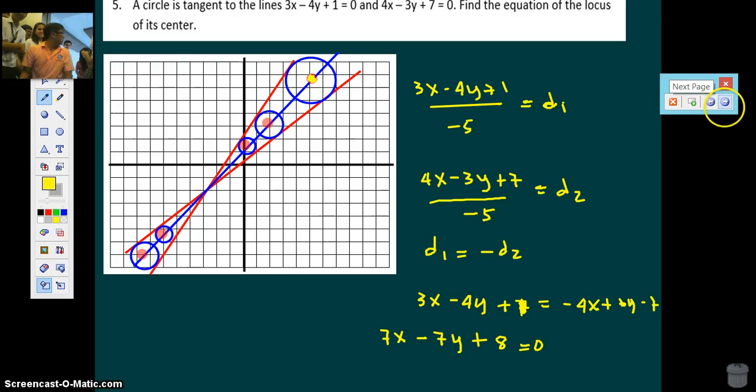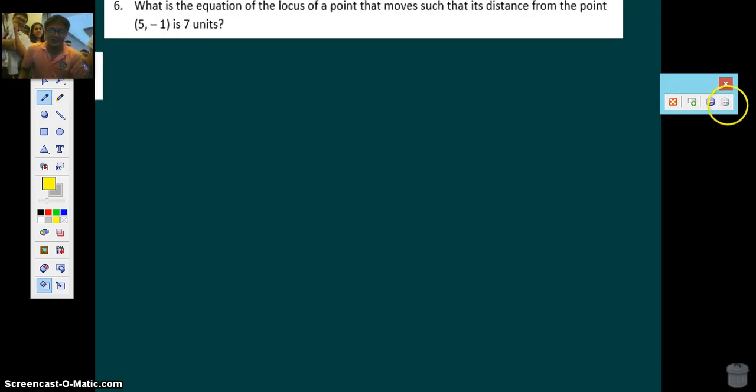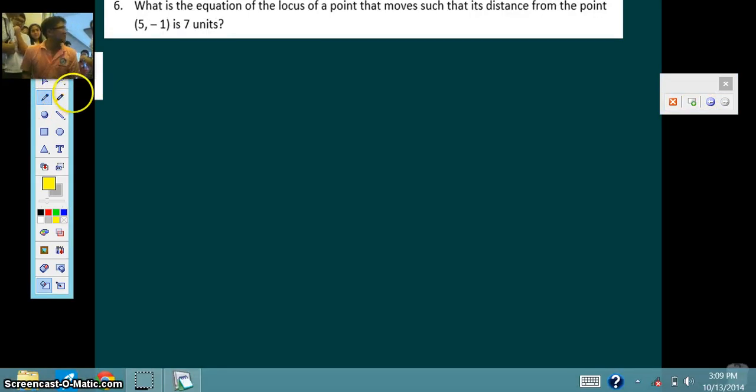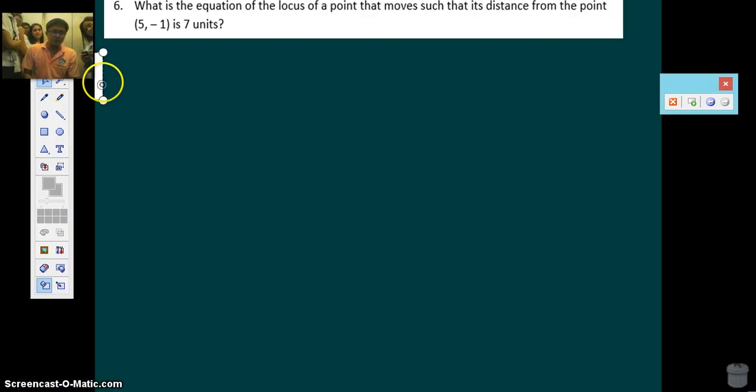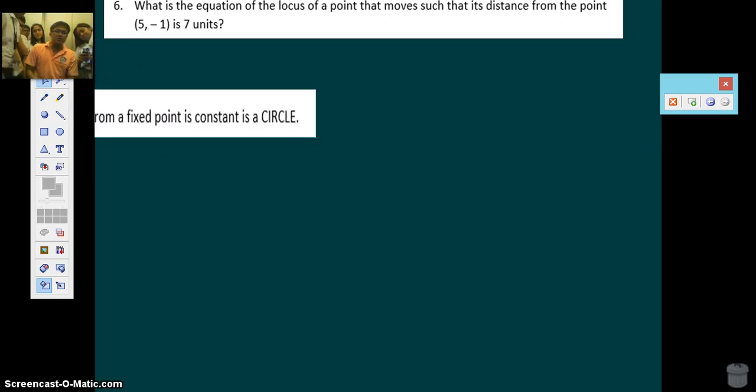Last! Before we leave the elevator. Number 6. That's the equation. The locus of a point that moves such that its distance from the point 5, negative 1 is 7 units. Now, many are confused by this question because they are not enlightened.